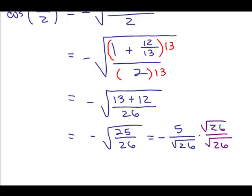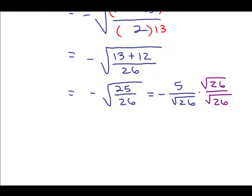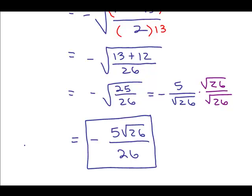Use a lot of algebra and trig. And so finally, I get my answer. It's going to be negative 5 square roots of 26 over 26. And that is the cosine of A over 2 for that particular value of A.